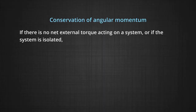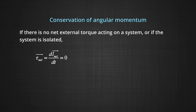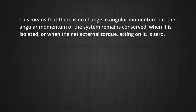Now we will talk about conservation of angular momentum, which is a very important concept used very often in daily life. If there is no external torque acting on a given system, or the given system is isolated, then net external torque — which is also written as the derivative of angular momentum — will be equal to zero, which leads to net angular momentum being equal to a constant. This means there is no change in angular momentum; the angular momentum of the given system remains conserved. Do remember the conditions under which it is valid: it applies when no external torque acts on the given system.